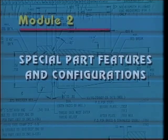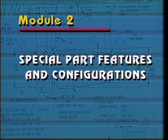This is Module 2 of the Excel Training No Sweat Blueprint Reading Program, Special Part Features and Configurations. It will help you recognize several common features as they appear on parts and on drawings. You'll be able to use the information to produce and measure part features.